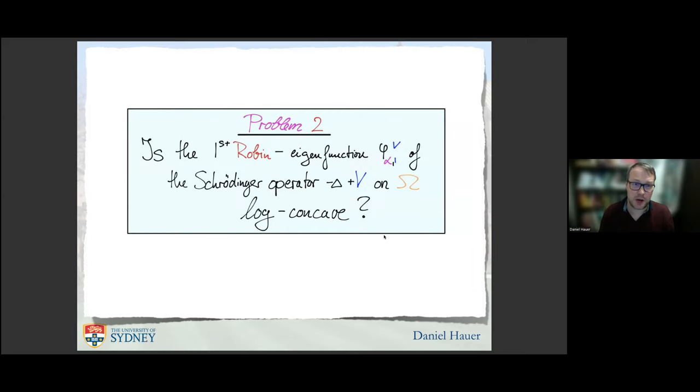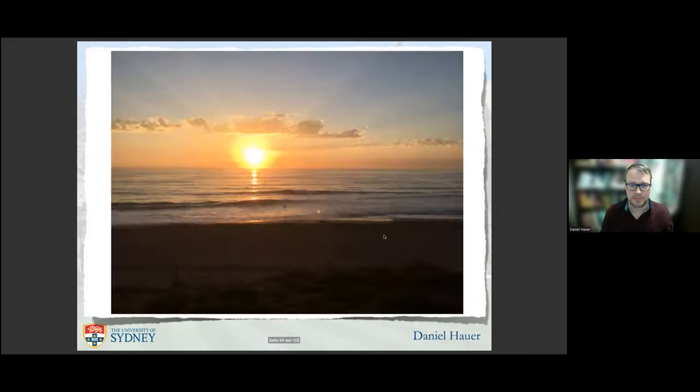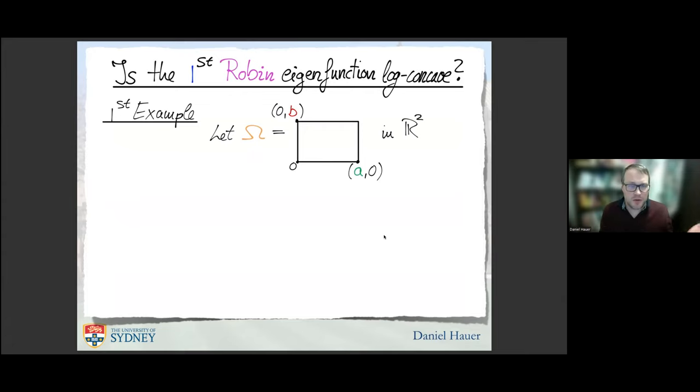The proof is nice and not very long, but I cannot give it here. Rather let's focus on a second interesting problem. This first statement relates and asks: is for any given convex potential V the first Robin eigenfunction log-concave, in order to obtain lower bounds on the spectral gap? What we did, which is natural, is you look for special cases first before you start proving the theory.